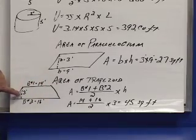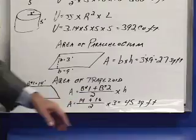We can then multiply the average times the height. 15 times 3 equals 45 square feet.